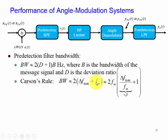However, if fm is much larger than delta f max, then we can say that the bandwidth is only 2 fm, which is known as narrowband FM.